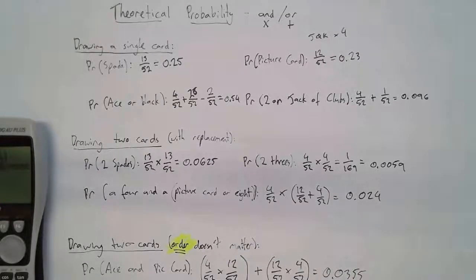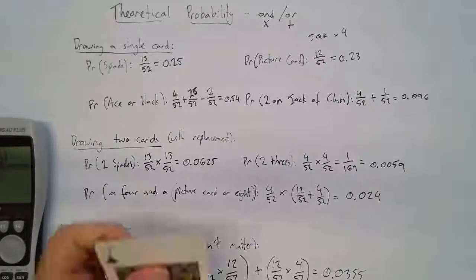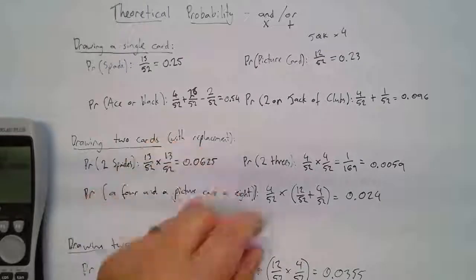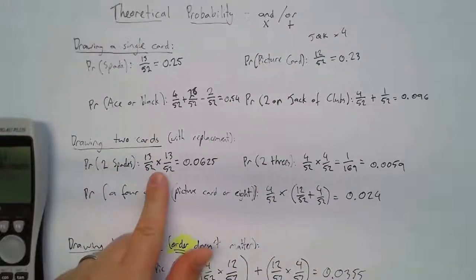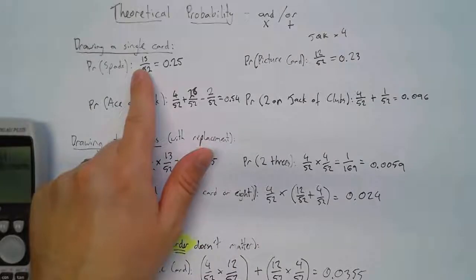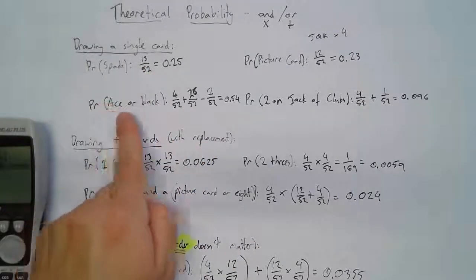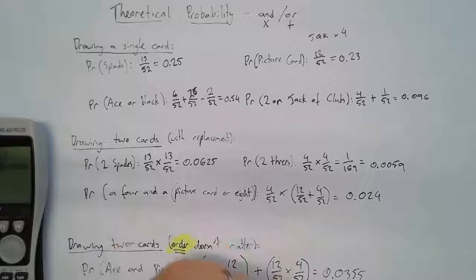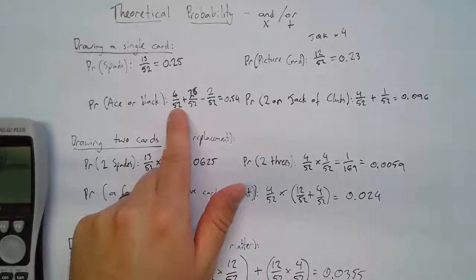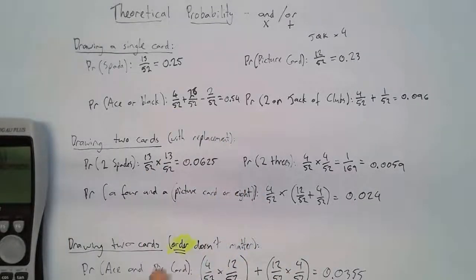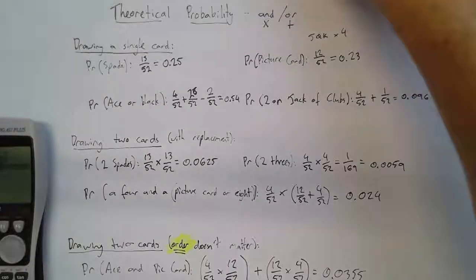To sum up: if you're picking out a card and then another card, it's times. For drawing a single card with OR, remember to check if any card fits both conditions and subtract it. If order doesn't matter, do it both ways with an OR in the middle.